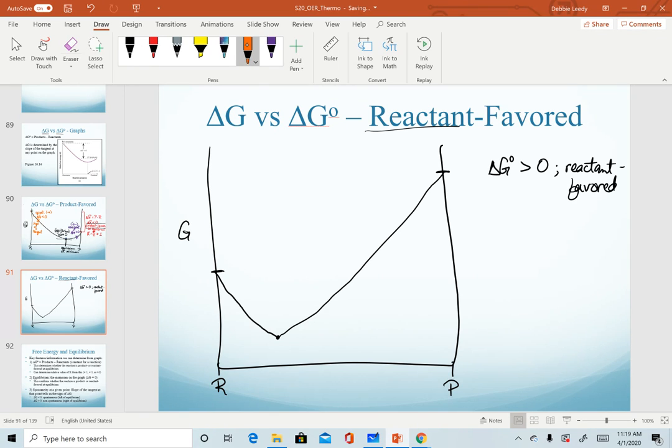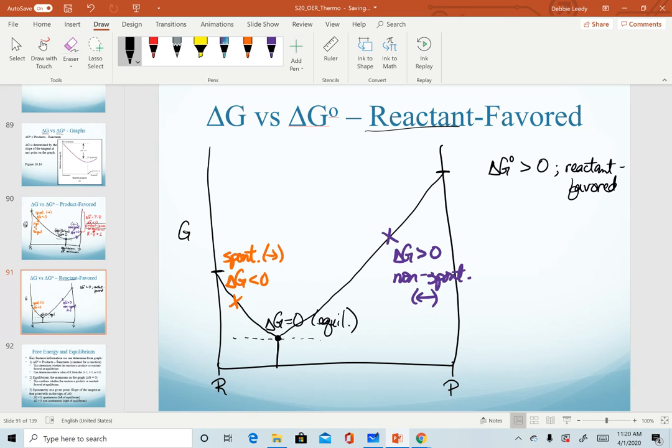And now we can again go through the same steps. Any point left of that minimum is going to have a negative slope or be spontaneous. At that point, my reaction is still moving forward. Any point to the right of that, I'm going to have a slope that is a positive value, meaning the value of delta G is greater than zero. At that point, my reaction is non-spontaneous. It's not going to keep going forward. In fact, to reach equilibrium, it has to go in the reverse direction. And so like all of our graphs, equilibrium is going to be at the very minimum. This is where delta G equals zero. This is equilibrium. And again, we can see that it is more toward the reactant side.